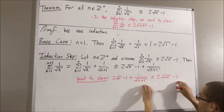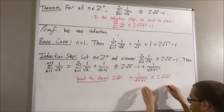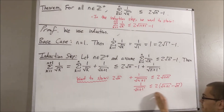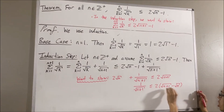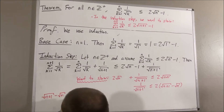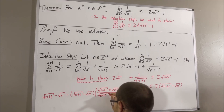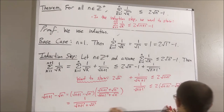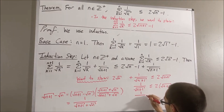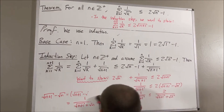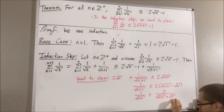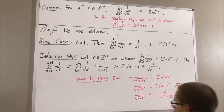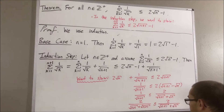Notice both sides of the inequality have a minus 1, so really we're expecting 2 square root of n plus 1 over square root of n plus 1 to be at least as large as 2 square root of n plus 1 over square root of n plus 1. Subtracting 2 square root of n to the other side, we're expecting this to be true. We can re-express square root of n plus 1 minus square root of n by multiplying by the conjugate, and then we can replace it with that expression. Notice that 1 over the square root of n plus 1 equals 2 over the square root of n plus 1 plus the square root of n plus 1, so we're expecting this inequality to be true.